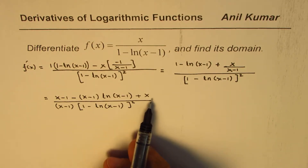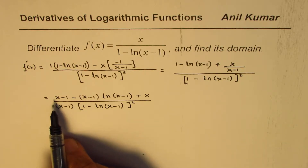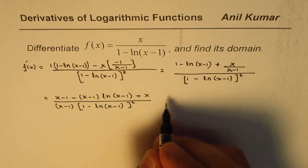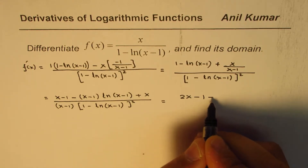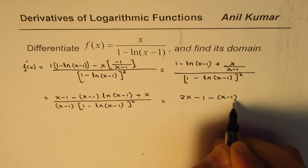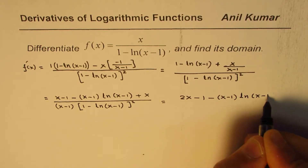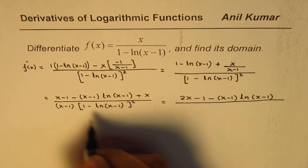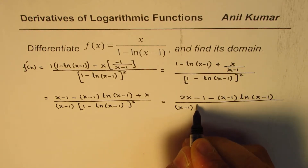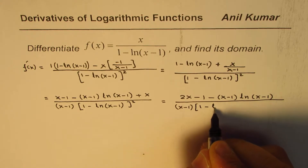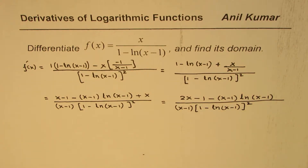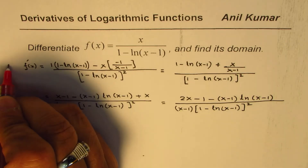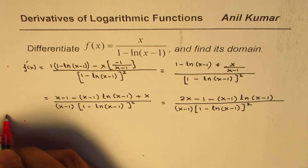That becomes the derivative. We could simplify this a bit by combining the two x's, so you get 2x minus 1. You can write this as: (2x minus 1) minus (x minus 1) ln(x minus 1), divided by (x minus 1) times (1 minus ln(x minus 1)) whole square. That becomes your derivative for the function — we've done the first part, which is differentiation. Now let's look into the domain.